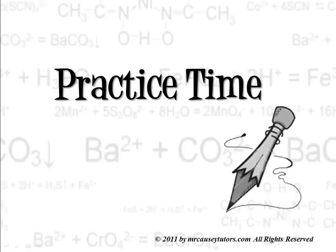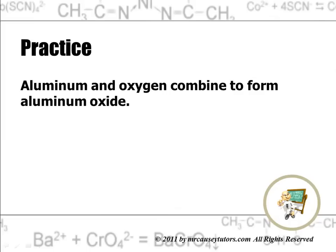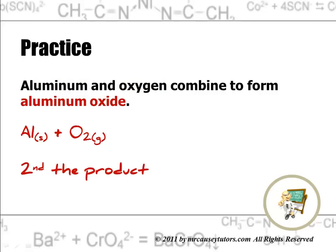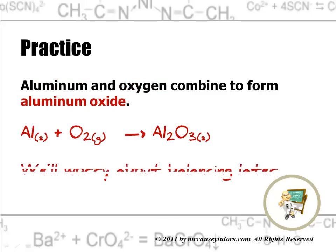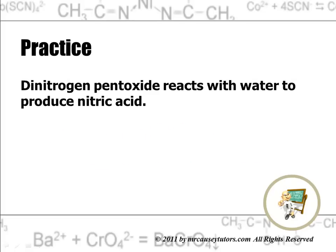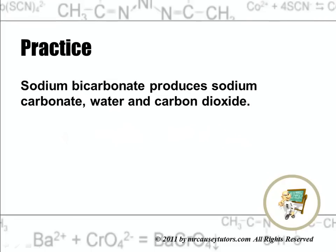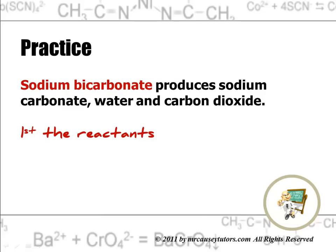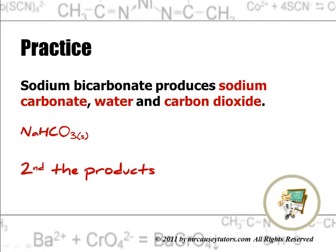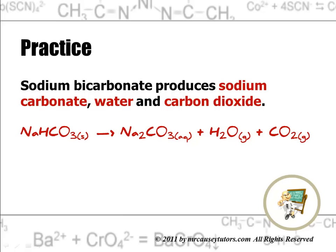Practice time — let's put it to good use. Aluminum and oxygen combine to form aluminum oxide. First the reactants — write them in. Second the product. We'll worry about balancing later; the important thing here is to write a good chemical equation. Next: dinitrogen pentoxide reacts with water to produce nitric acid. First the reactants — dinitrogen pentoxide and water — write them down. Second the product. Notice that this was a decomposition reaction.